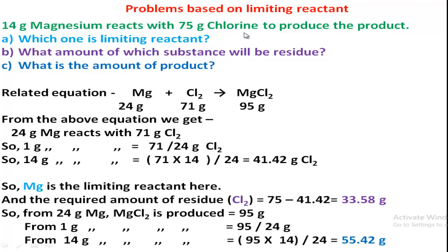Let's see the solution. First, write the related equation: magnesium reacts with chlorine to produce magnesium chloride. We check if the equation is balanced — it is balanced, so no need to balance further. From the balanced equation: 24 grams of magnesium reacts with 71 grams of chlorine to produce 95 grams of magnesium chloride.